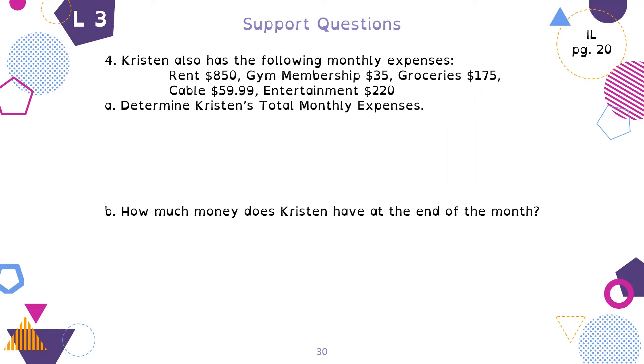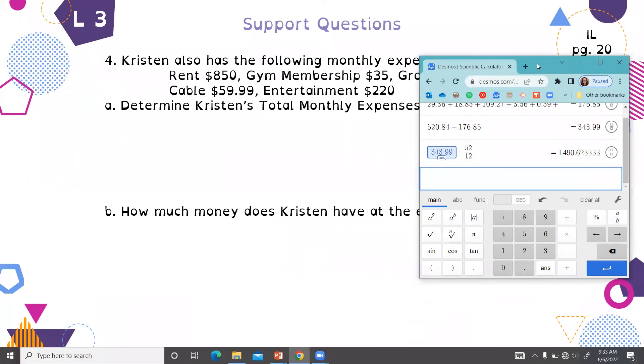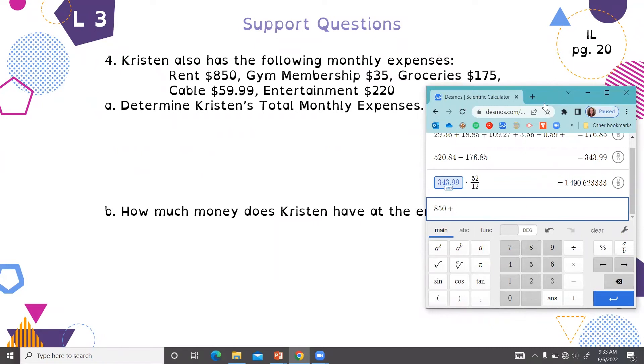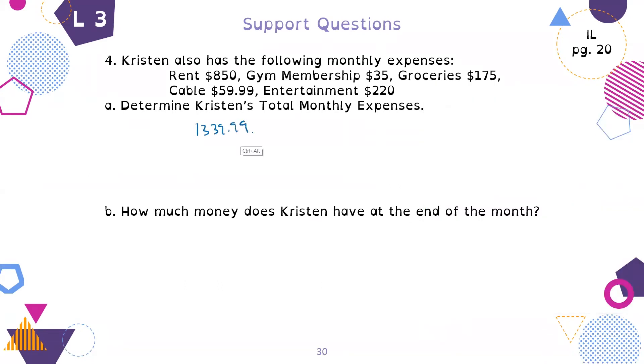Number four, Kristen also has the following monthly memberships: rent for $850, gym membership for $35, groceries for $175, cable for $59.99, and entertainment for $220. Determine her total monthly expenses. We add up all of these expenses. This is how you budget in life. Life is a lot better if I actually do it. We have $1,339.99 for total monthly expenses.